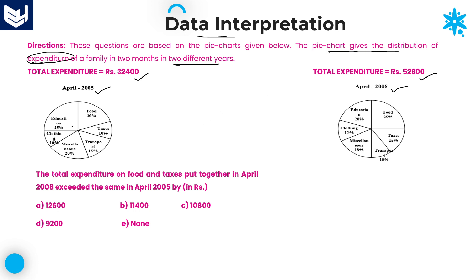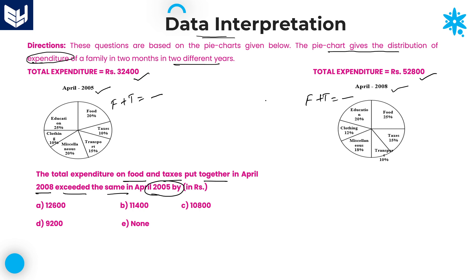Now coming to the questions. Based on this information, we need to solve the questions. Look at the first question: the total expenditure on food and taxes together in April 2008 exceeded the same in 2005 by how much? Which is nothing but: how much more is food and taxes expenditure in April 2008 than that of 2005? So you need to calculate food plus tax in 2005, food plus tax in 2008, and then calculate the difference between those two. That is your answer.